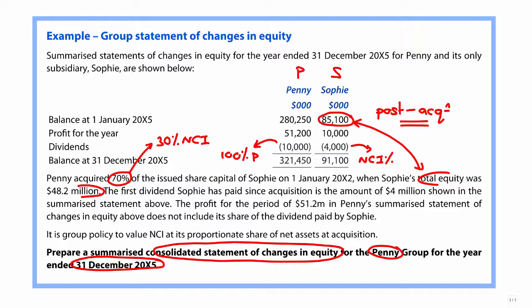A small but important point: the profit for the period of 51.2 million in Penny's summarised statement of changes in equity does not include its share of the dividend paid by Sophie. This is because if Penny had recorded that dividend from Sophie, we would need to eliminate it as it is intra-group. It is also group policy to value non-controlling interest based upon the proportionate share of net assets method.